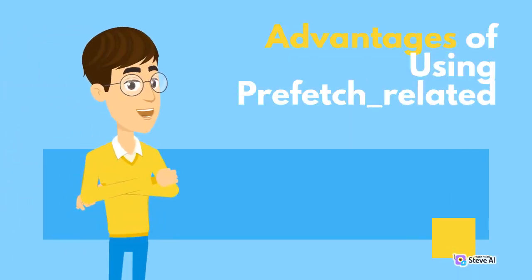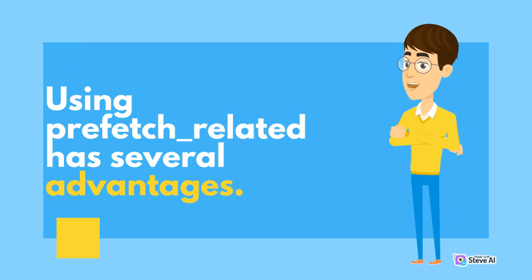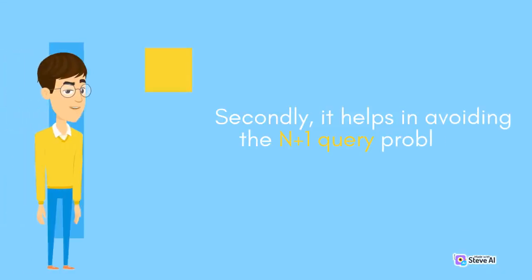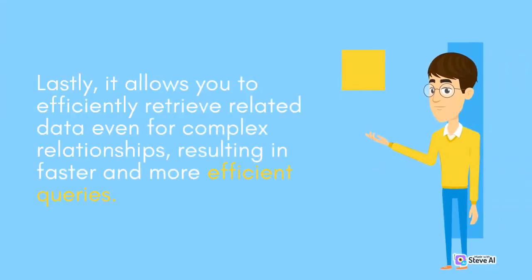Using prefetch_related has several advantages. Firstly, it reduces the database hits by fetching related objects in a single query, improving query performance. Secondly, it helps in avoiding the N+1 query problem, just like select_related. Lastly, it allows you to efficiently retrieve related data even for complex relationships, resulting in faster and more efficient queries.